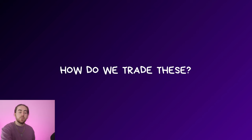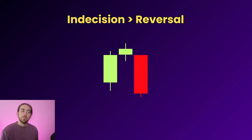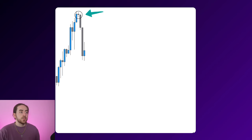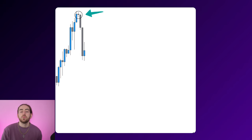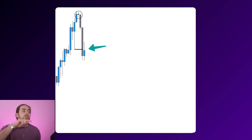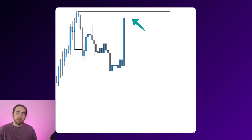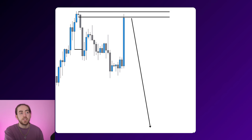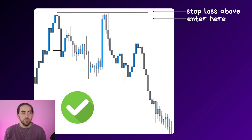To trade the indecision reversal we do it in exactly the same way as the pin bar reversal. We want to see a doji or indecision candle taking place within a supply or demand zone, then wait for our standard confirmation — a change in structure from higher highs to lower lows — then wait for a pullback to the doji and expect the market to move to the downside. We sell from the indecision candle with a stop loss above and ride the trade down to the targets.